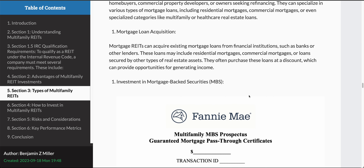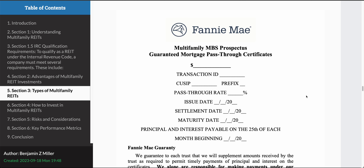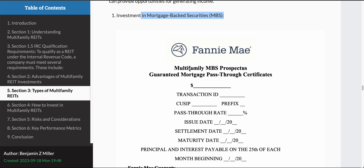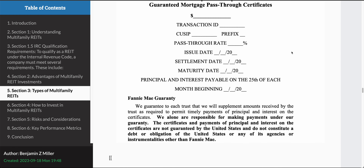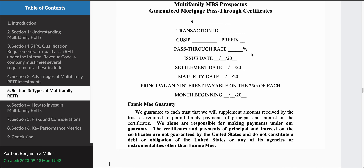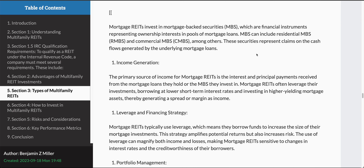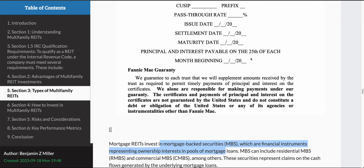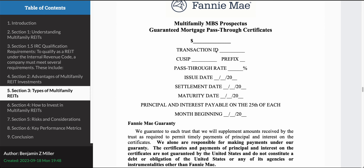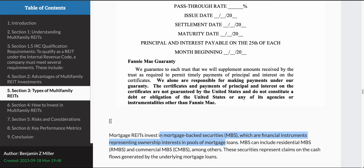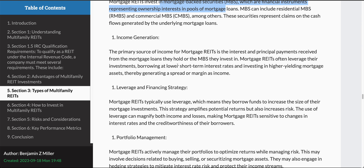Here's an example of mortgage-backed securities — this is with the company Fannie Mae. We're looking at a multifamily mortgage-backed security prospectus for Fannie Mae, and you can see some of the things contained within that prospectus. Mortgage REITs invest in mortgage-backed securities, and the primary source of income on mortgage REITs is interest and principal payments.